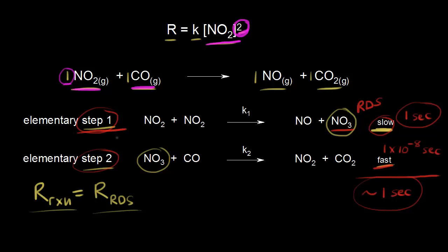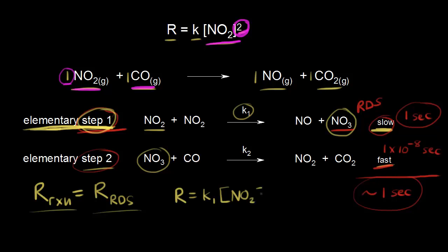We can figure out the rate of the rate determining step because step one is an elementary reaction. We start by writing: rate = rate constant. For step one, the rate constant is K sub one. Times the concentration of our reactant NO2 in brackets — and since the coefficient is one, for an elementary reaction we take that coefficient as the exponent, so that's to the first power. And then we have another NO2, so we multiply by the concentration of NO2 again, also to the first power, giving us the rate law for our rate determining step.